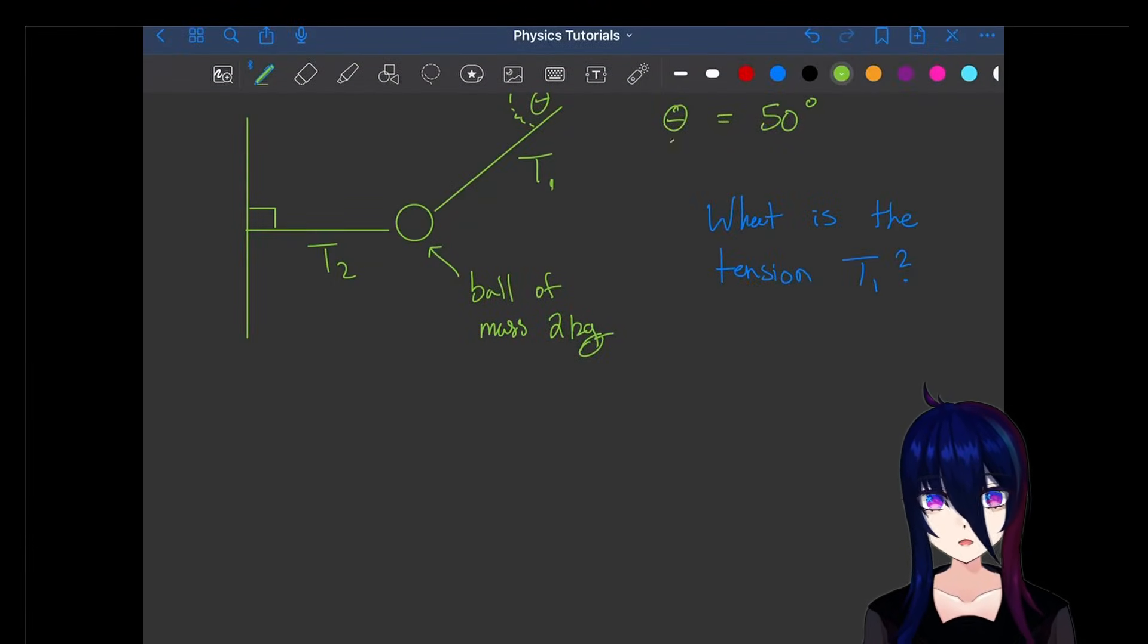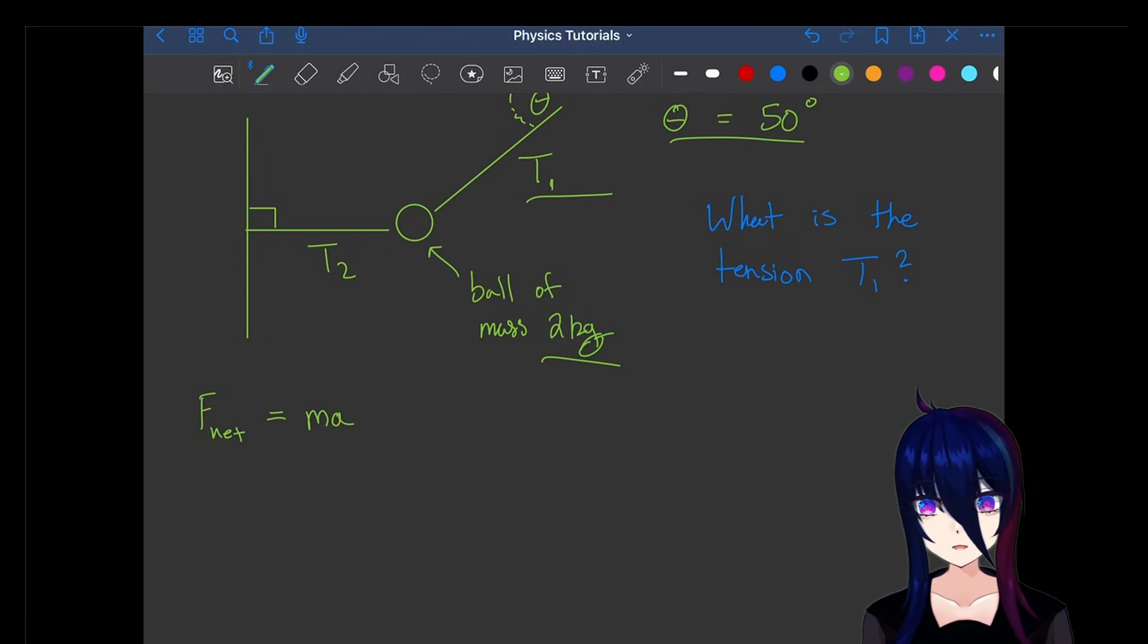We have a ball suspended by a T1 cable at an angle of 50 degrees and a T2 cable at a horizontal angle with a ball of mass of 2 kilograms. What is the tension of the T1 cable?